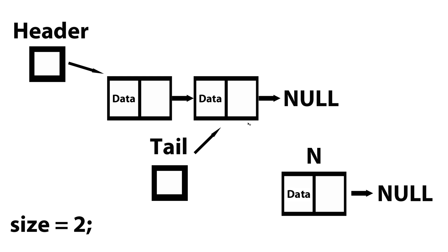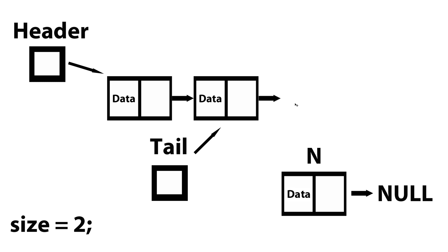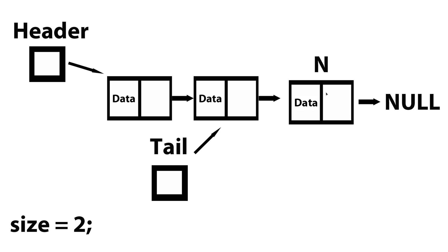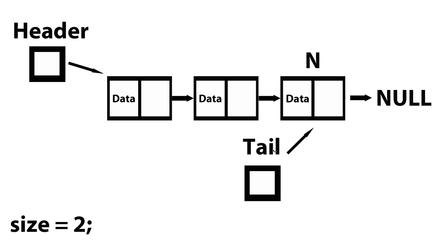Since tail is already pointing to the last node within our list, I have access to this node. I could change what this node is pointing to — instead of pointing to null, I make it point to n. Now from here, all I have to do is update what the tail points to, because this node is no longer our last node; n is our last node. Finally, all I need to do is increment the size.